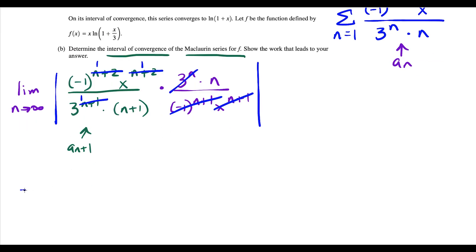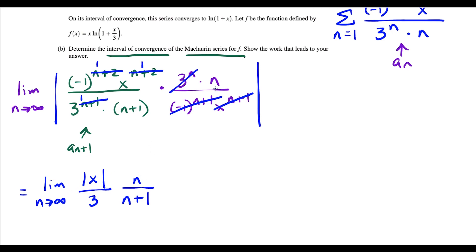Sometimes the algebra can be a little annoying for these questions, but you just have to go very carefully. So we have the limit now as n goes to infinity, and we write the leftovers. The absolute value of negative 1 is just 1, so we can ignore that piece. The absolute value of x needs to stay in absolute value because x could be positive or negative. But the absolute value of positive 3 is just 3, and n over n plus 1 can also exit the absolute value because n is going to positive infinity. So this gives us the absolute value of x over 3, times the limit of n over n plus 1, which equals 1.